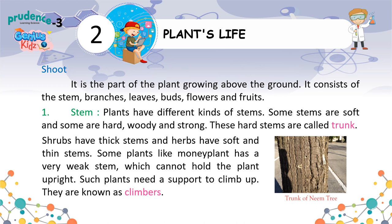Stem. Plants have different kinds of stems. Some stems are soft and some are hard, woody and strong. These hard stems are called trunk. Shrubs have thick stems and herbs have soft and thin stems. Some plants like money plant have a very weak stem which cannot hold the plant upright. Such plants need a support to climb on. They are known as climbers.